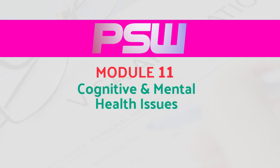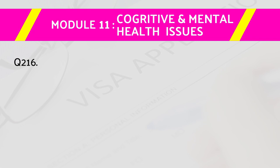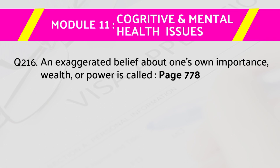Module number 11: Cognitive and Mental Health Issues. In this module, we include 35 most important questions and their answers. Let's start the video. Question number 216: An exaggerated belief about one's own importance, wealth, or power is called a...